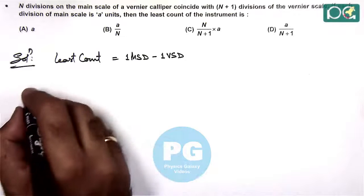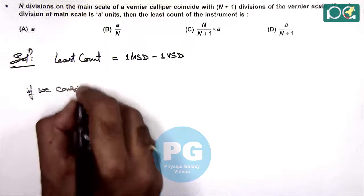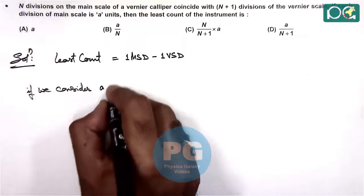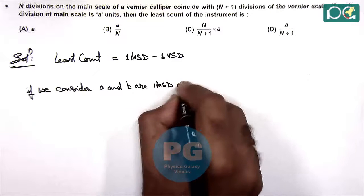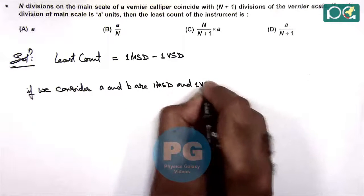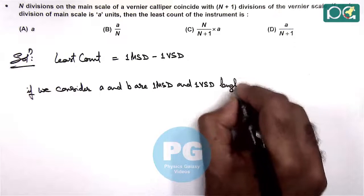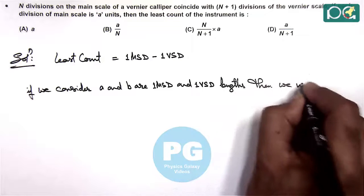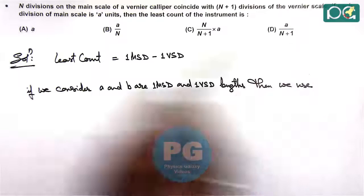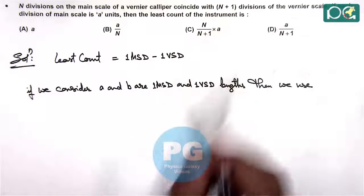So here if we consider A and B are 1 main scale division and 1 vernier scale division length. Then here as the question says, n divisions on main scale coincide with the n plus 1 division of vernier scale.